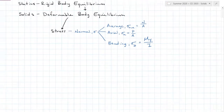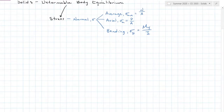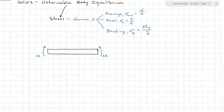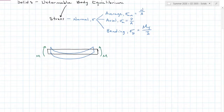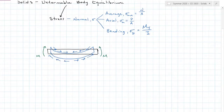Let's define some terms. First, bending moment. If I have a beam here that is completely flat when not loaded, and we load it with two moments at either end — these are positive moments because they are compressing the top of the member — the member is then going to deform into a curved shape, experiencing compression in the top and tension in the bottom.